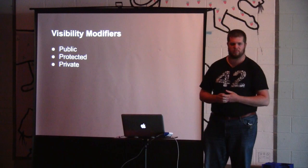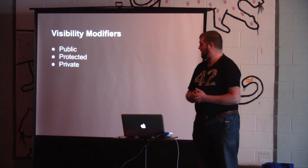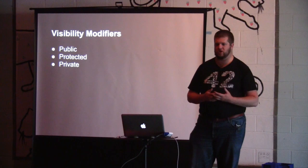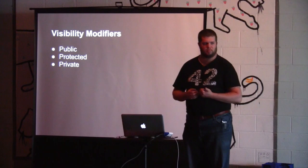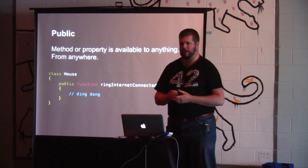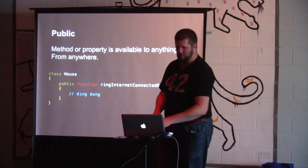The way we implement encapsulation is through visibility modifiers. There are three visibility modifiers in PHP, and these are pretty standard across other programming languages as well. The first one is public. If you have a function, method, or property marked as public, it means it's going to be accessible from anywhere — anything that has access to that object at all is going to be able to call it or change it. Public is available everywhere, whether you're inside the class or outside the class.